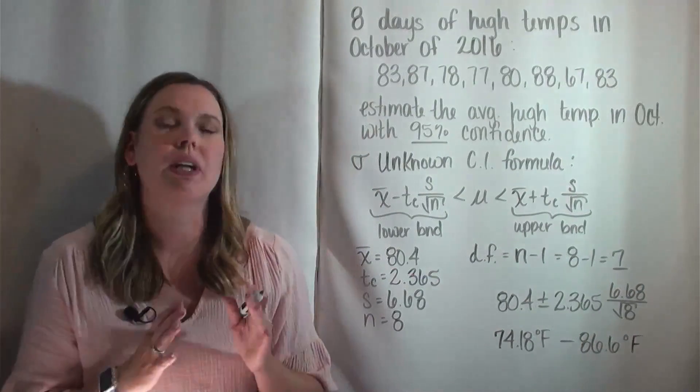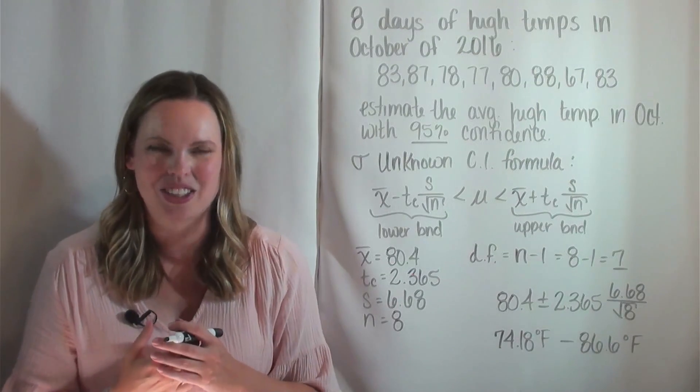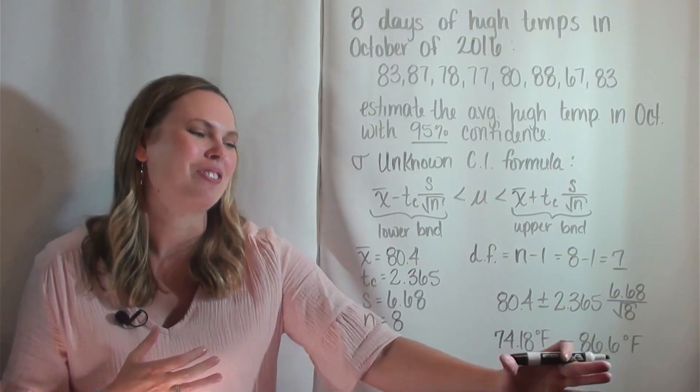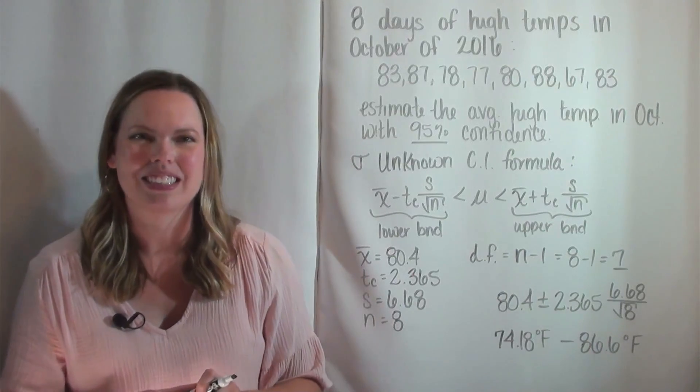So I can be 95% confident that the true average, the average of all days in October, was between 74.18 and 86.6 degrees Fahrenheit.